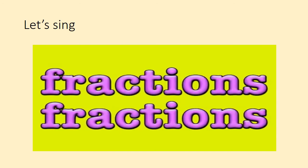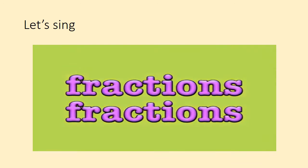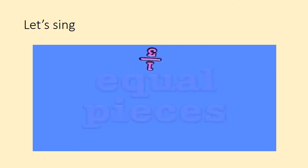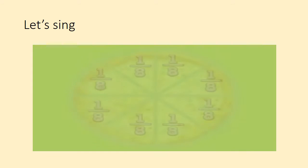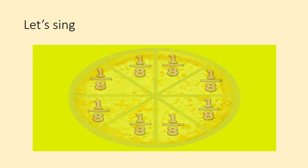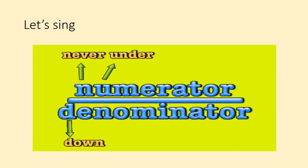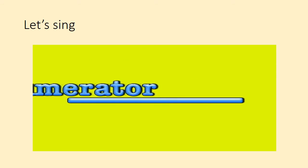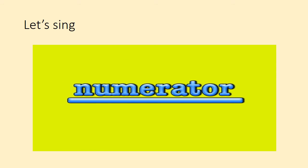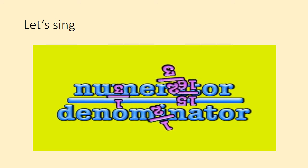Fractions, fractions, they're parts of a whole. Fractions, fractions, they're what I know. They're equal pieces, they're parts of a pie. Fractions, fractions, they're all right. Numerator — never under — on the top. U for never under, D for denominator's always down. Numerator up, denominator down. Fractions, fractions are all around.